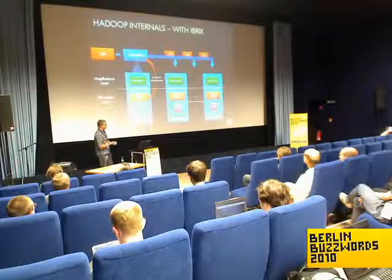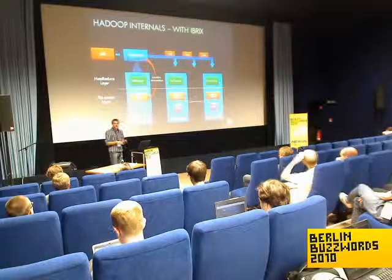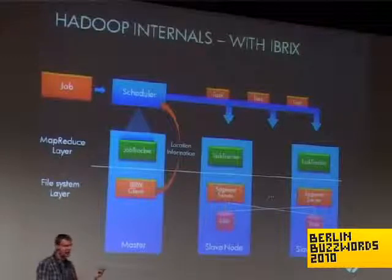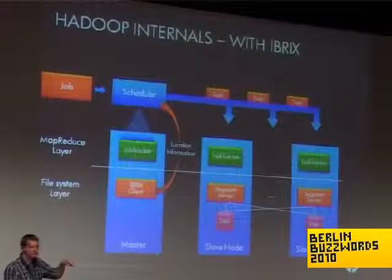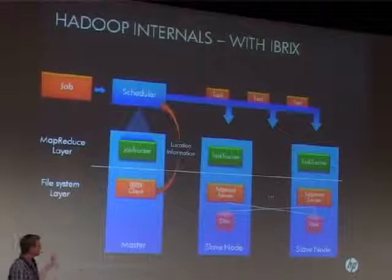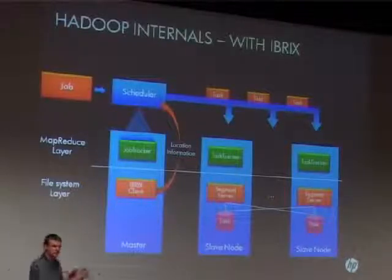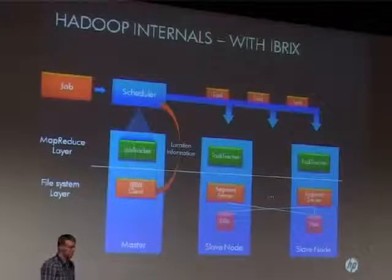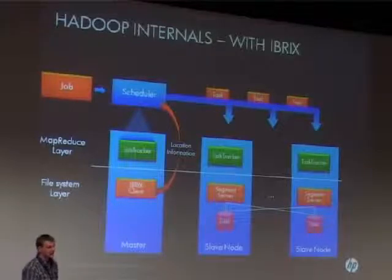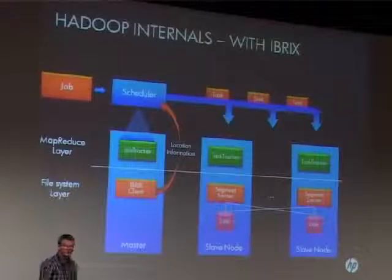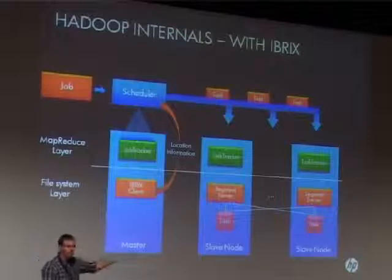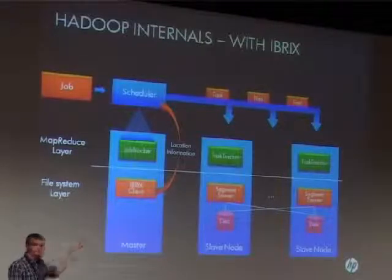Also built into this file system by design is the notion of locality. Because every segment server owns segments and there's a one-to-one relationship, each file is always stored on one particular segment. We can then very easily answer the question 'who owns file X?' This information can be exported to the scheduler. When the scheduler needs to scan across a number of documents, it asks who owns document one, gets the locality information, and shifts the computing task down to the task tracker running on top of that segment server.